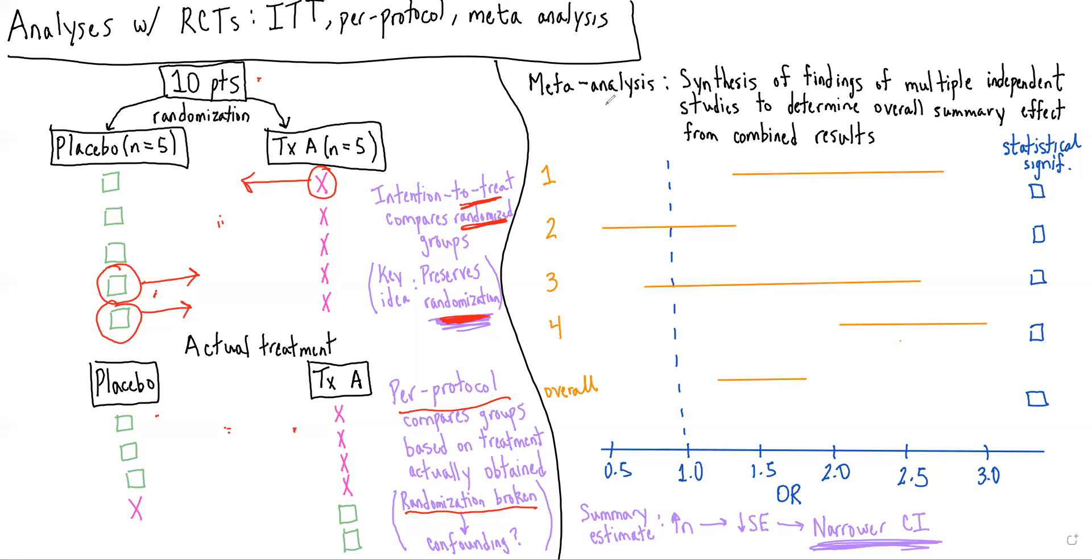The second topic I want to talk about in this lecture is meta-analysis. So what a meta-analysis is, is where you take findings of multiple independent studies and synthesize them into a single study in order to determine an overall summary effect.